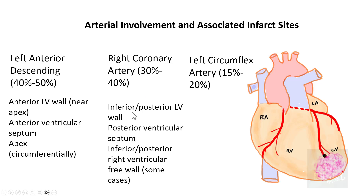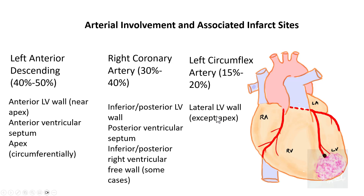When the right coronary artery is involved, the infarct site includes the inferior or posterior left ventricular wall, the posterior part of the ventricular septum, and in some cases the inferior or posterior right ventricular free wall. When there is involvement of the left circumflex artery, it involves only the lateral left ventricular wall except the apex.